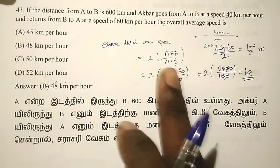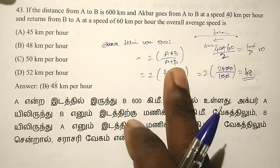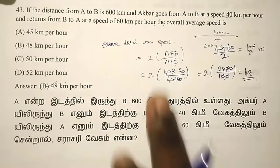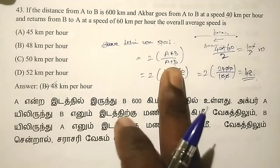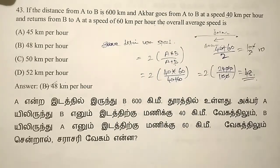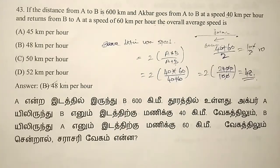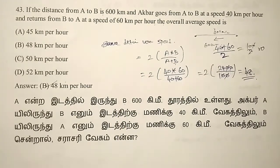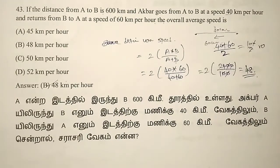The correct formula to use is: 2A into B divided by A plus B. Thank you friends.